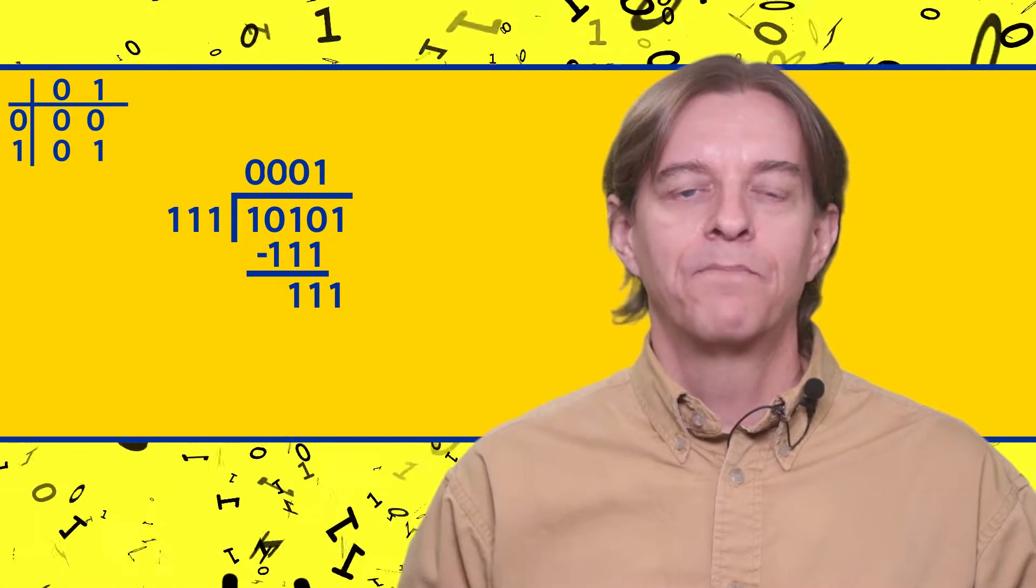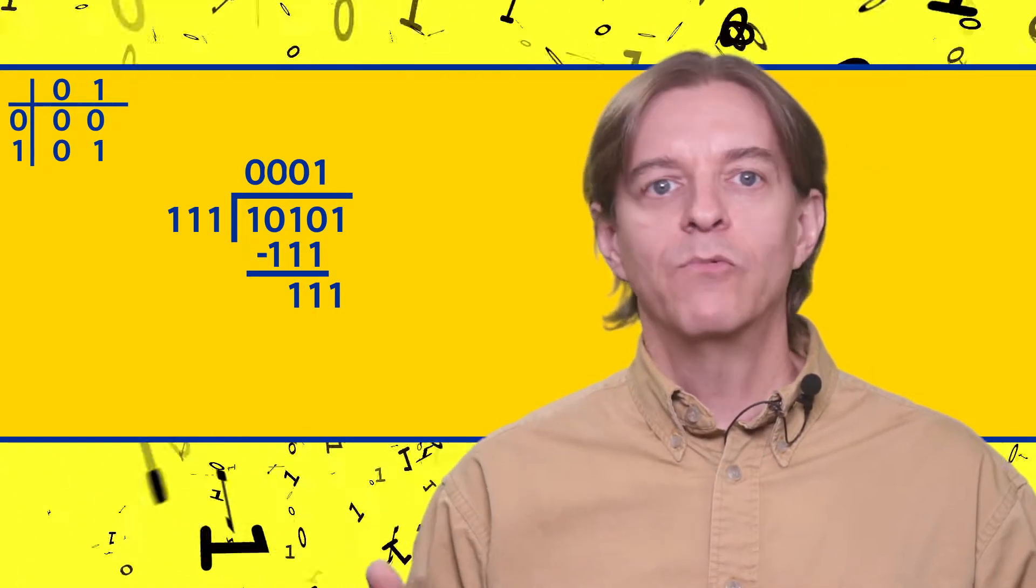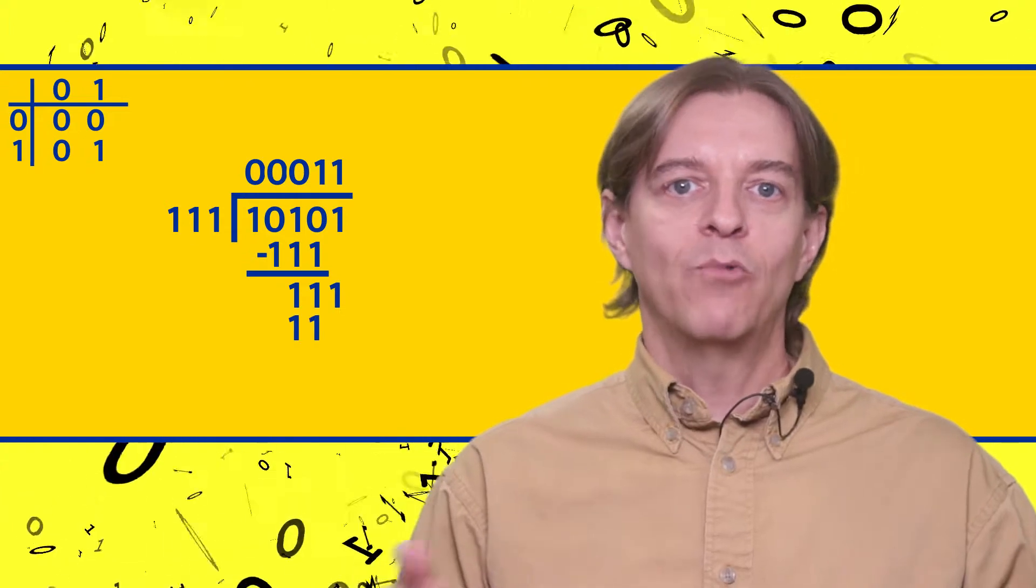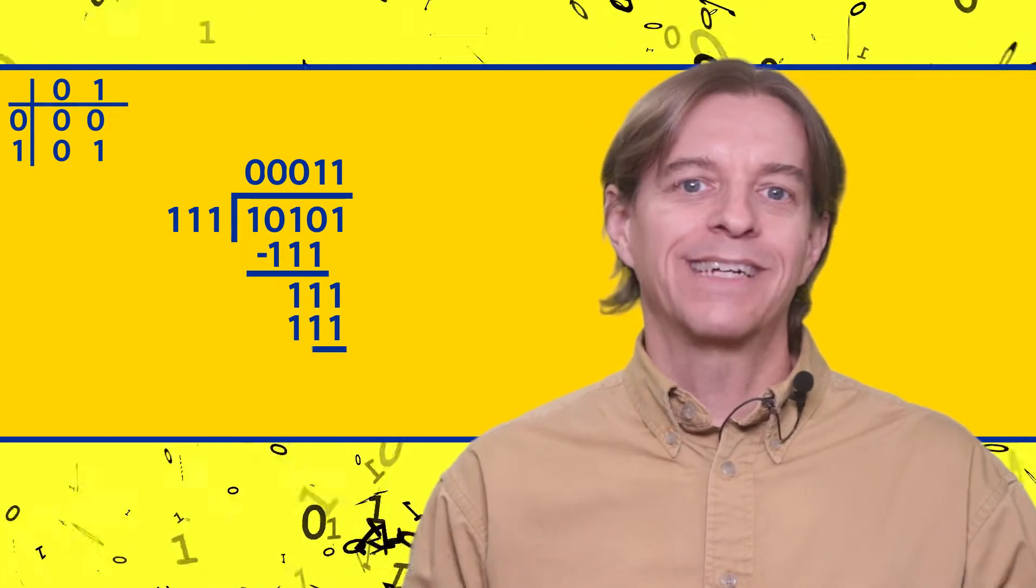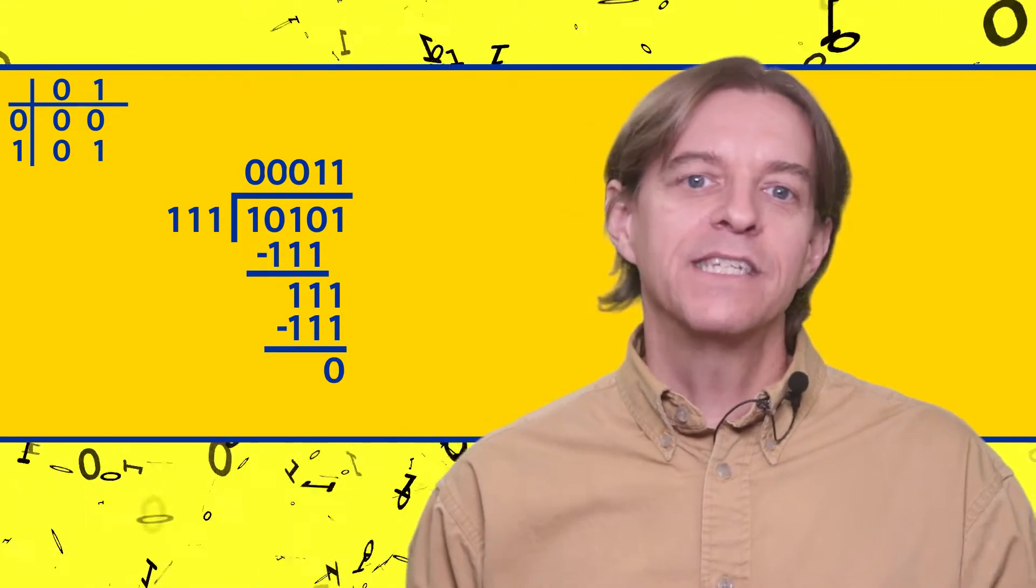Now we bring down the other one. 111 is equal to 111, so we write a one in the quotient, put the 111 under the 111, and subtract. Of course, this is zero, and we're done.